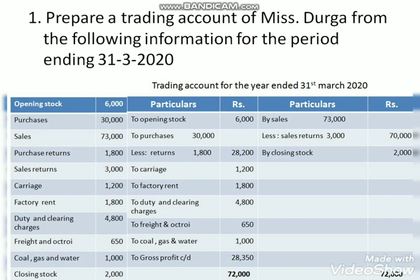Comparing the total debit side and total credit side: if the debit side exceeds, there is a gross loss; if the credit side exceeds, there is a gross profit. In this problem, the credit side is 72,000 and the debit side is 43,650, so the credit side is greater — indicating gross profit.